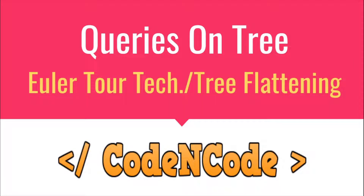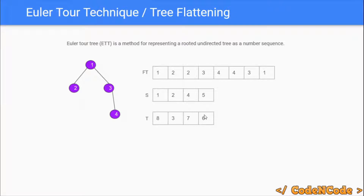Hello guys, this is Code and Code, and this is the first lecture of this query-on-trees lecture series. In this lecture we are going to see how the tree flattening technique — or Euler tour technique — works. The idea is to represent the whole tree, which is a nonlinear data structure, into an array, which is a linear data structure, so that query techniques like square root decomposition or segment tree can be applied on trees.